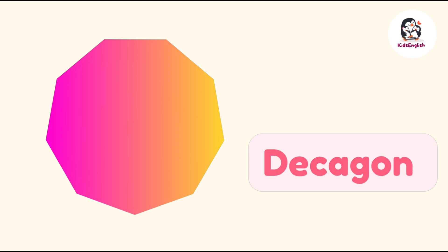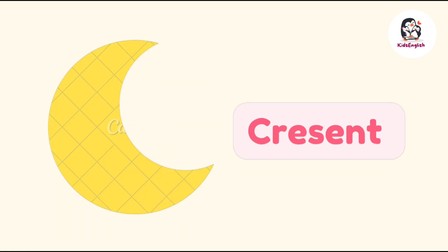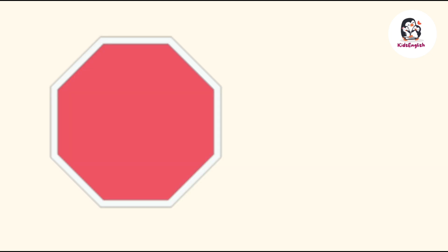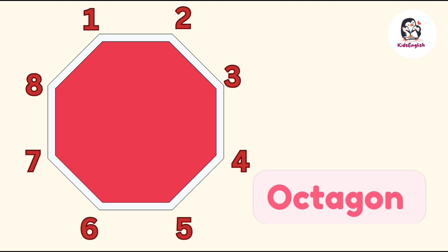Nonagon — nonagon has nine sides, one, two, three, four, five, six, seven, eight, nine. Octagon — octagon has eight sides, one, two, three, four, five, six, seven, eight.